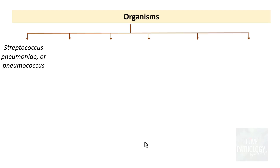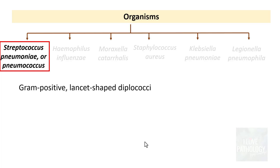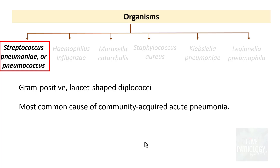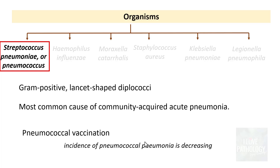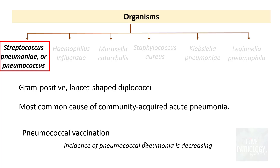Now let's look at the various organisms that can cause community-acquired bacterial pneumonia. The first and most common cause is Streptococcus pneumoniae. Even though the incidence of pneumococcal pneumonia is decreasing due to vaccination, it is still the most common cause. Diagnosis rests on demonstration of diplococci in neutrophils in the sputum, but since Streptococcus pneumoniae is part of the normal flora in around 20% of adults, this can be a false positive.